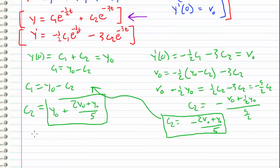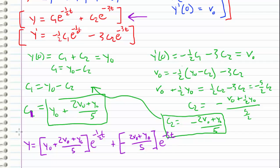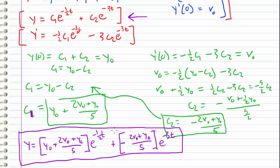Coming back to our general solution y = c1·e^(−t/2) + c2·e^(−3t), and plugging in c1 and c2, we get y equals (y0 + 2v0 + y0)/5 times e^(−t/2), plus (−2v0 + y0)/5 times e^(−3t). This is our final unique solution to the differential equation, since we have already applied the initial conditions for some v0 and y0.